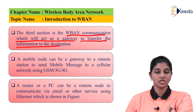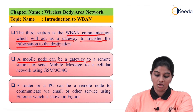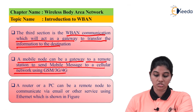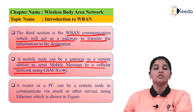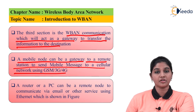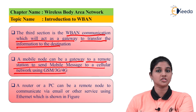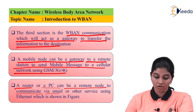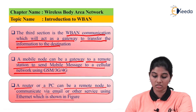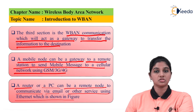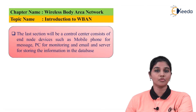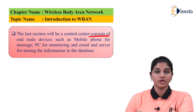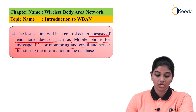The next section of the architecture is wireless band communication, which acts as a gateway to transfer information to the destination. After receiving signals from the central control unit, signals are transmitted to the destination using a gateway. A mobile node can be a gateway to a remote station to send messages via a cellular network using GSM, 3G, and 4G. A router or PC can be a remote node to communicate via email or other services using Ethernet.